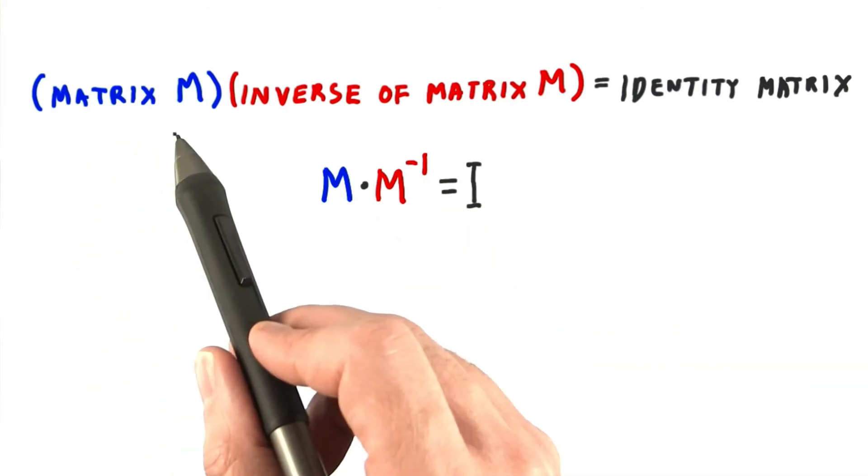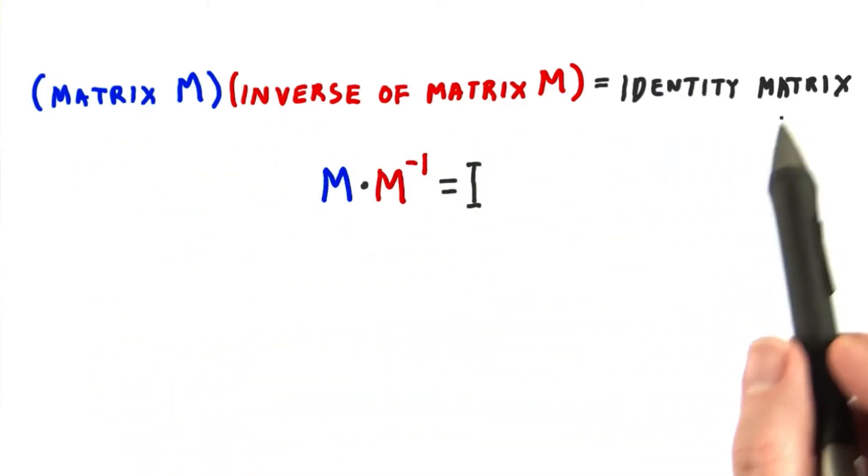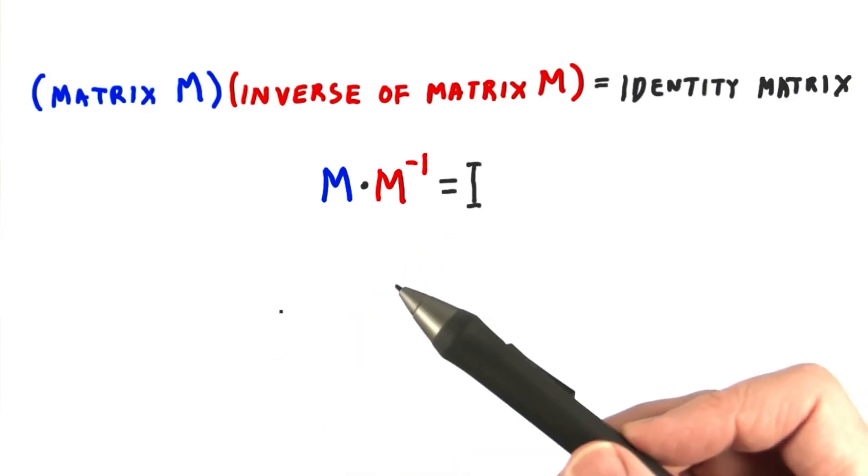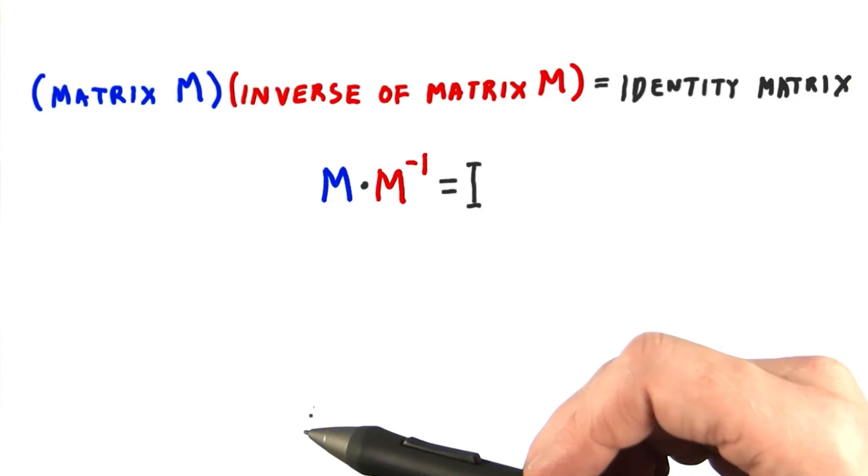If you multiply a matrix by its inverse, you get the identity matrix. The inverse of a matrix essentially undoes the work of that matrix. For example, if your matrix moves an object 5 units up,